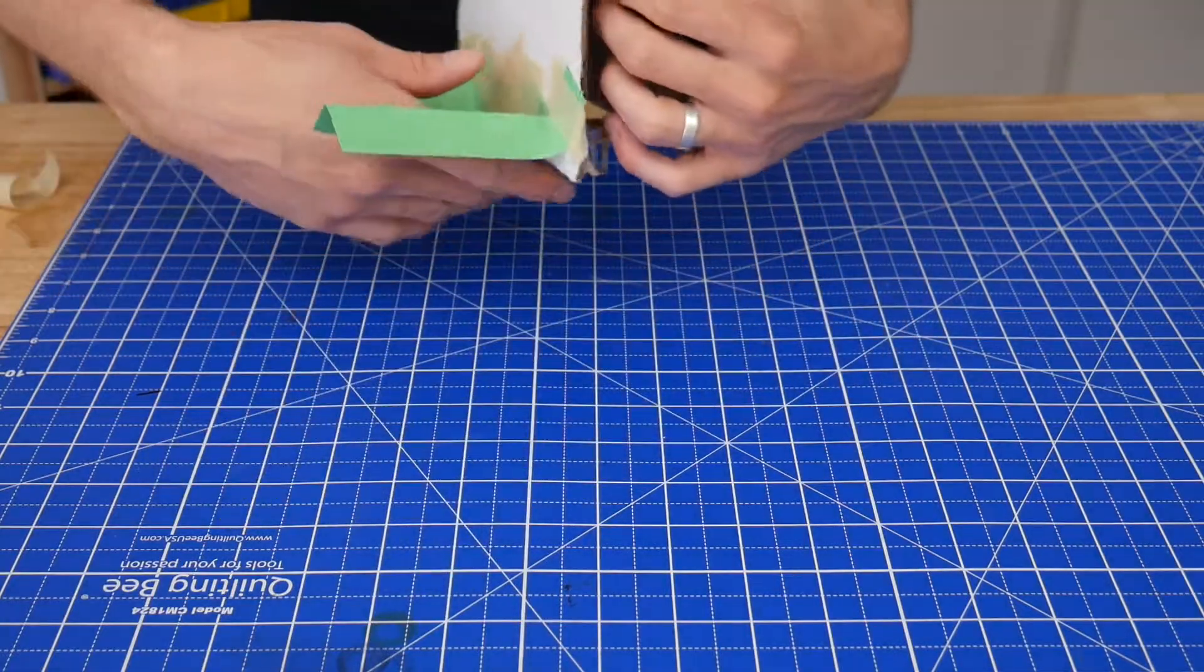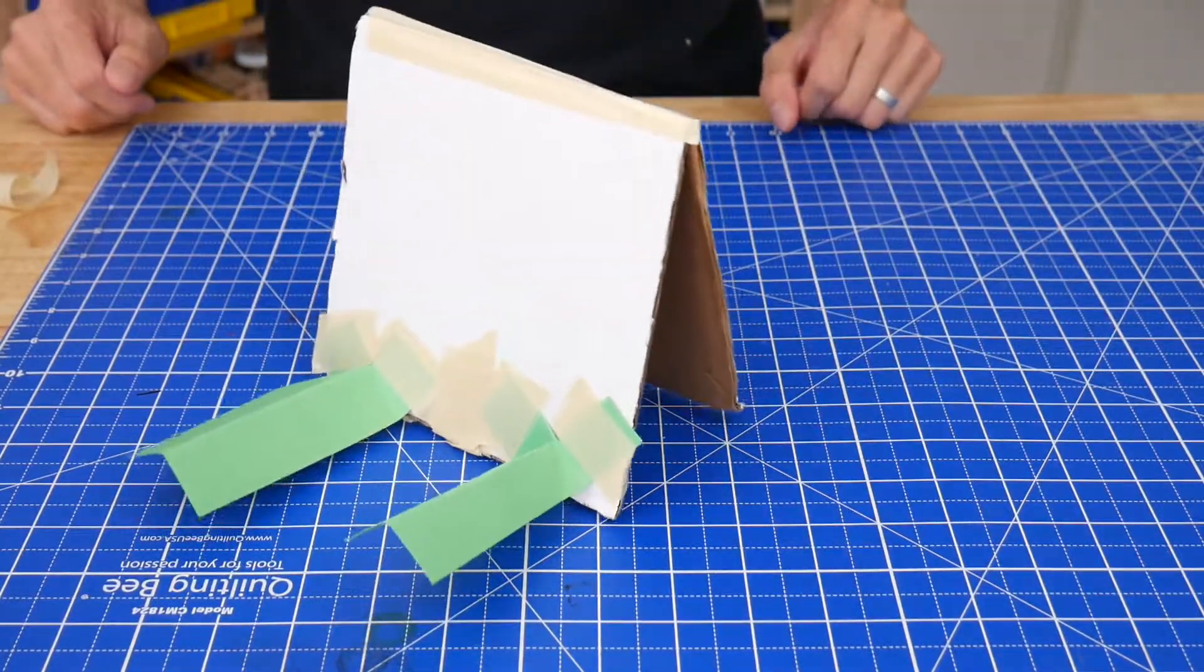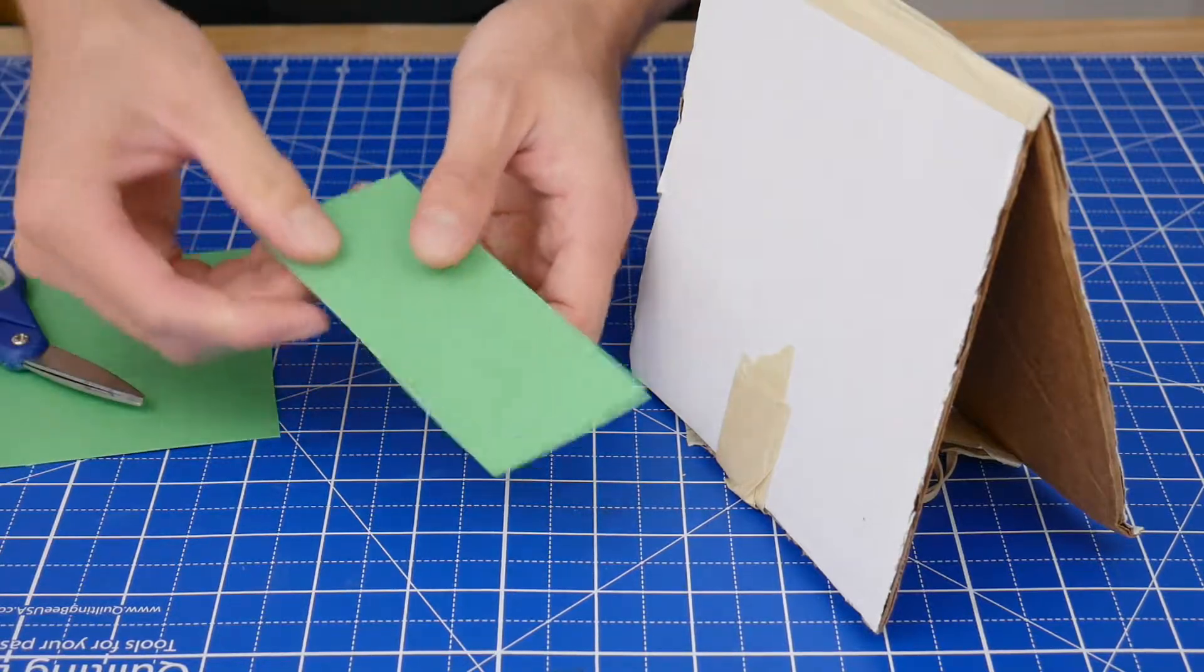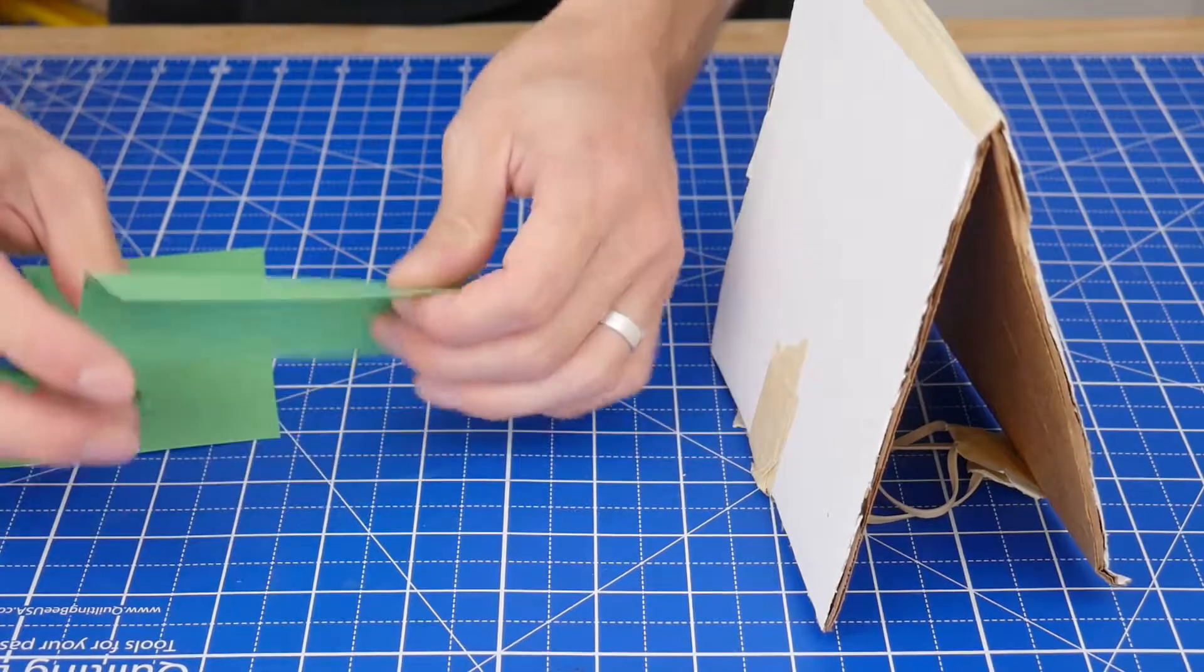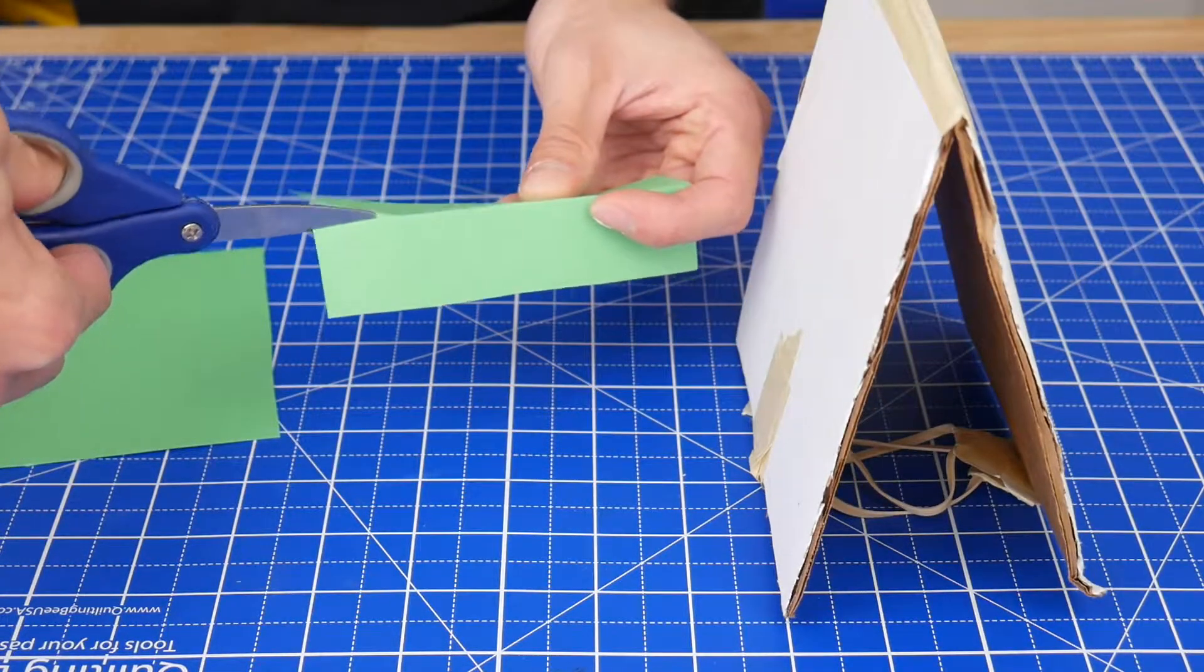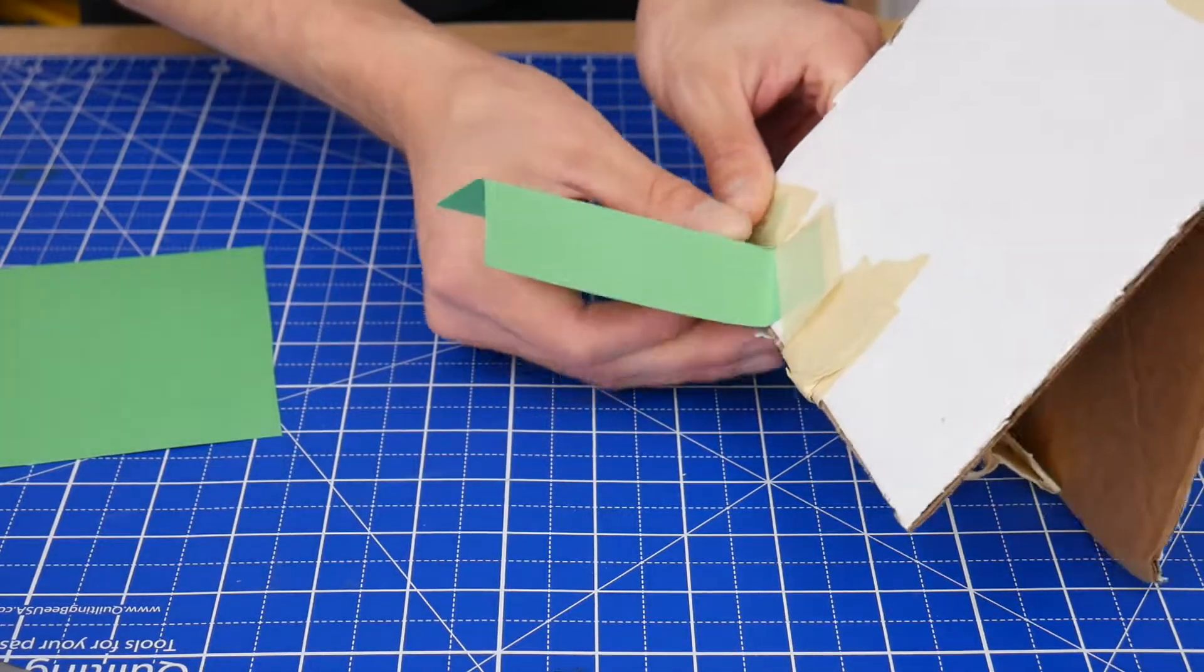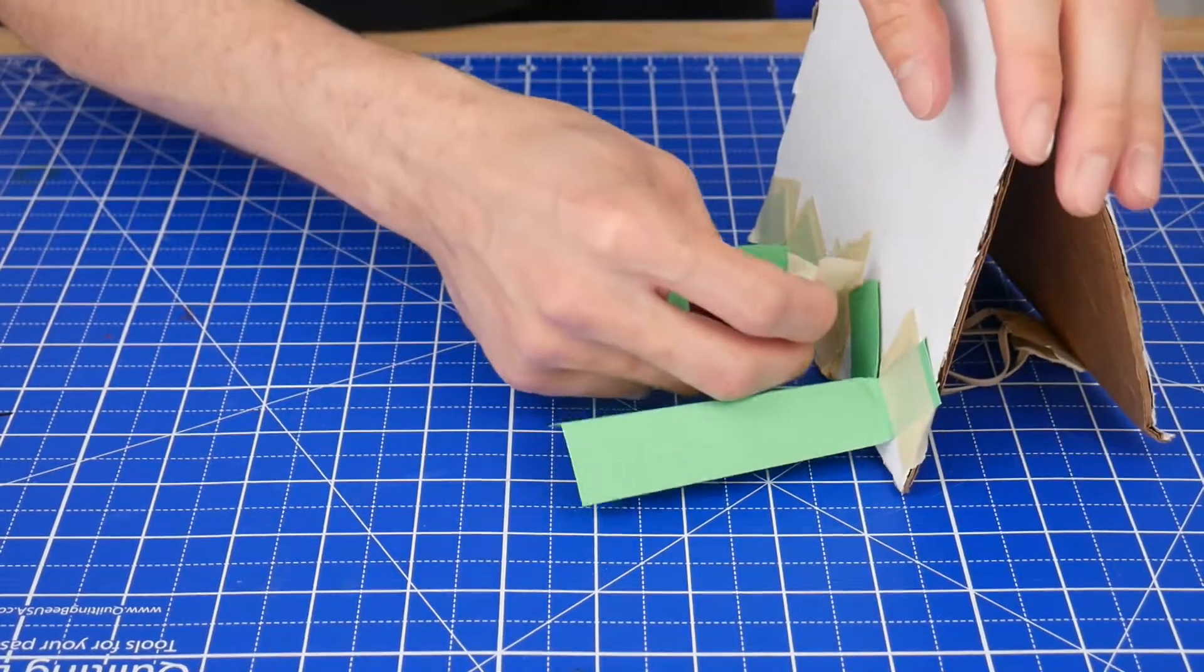And finally, the bonus challenge of getting the frog to land on its feet two times in a row. To make some feet, cut off a strip of your index card and fold it in half hot dog style. Then snip the ends and fold up those tabs and then tape those onto the cardboard like this. Then repeat one more time.